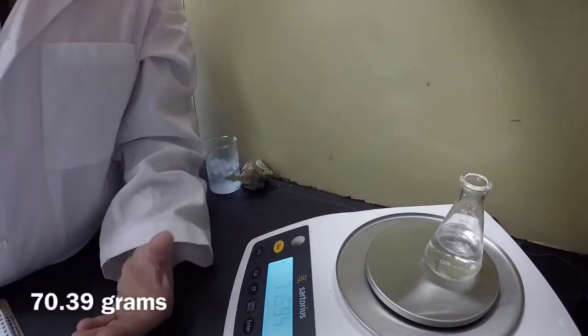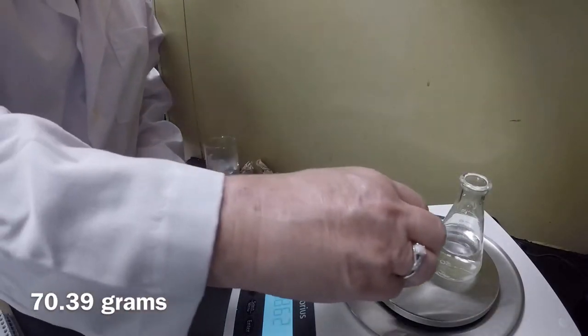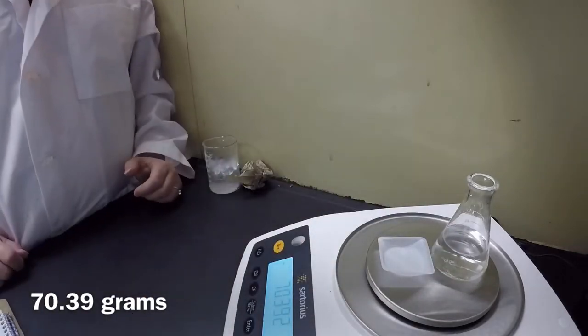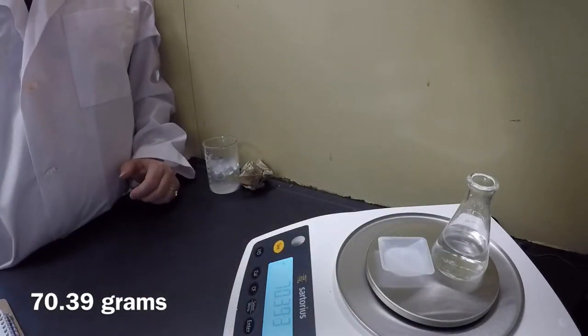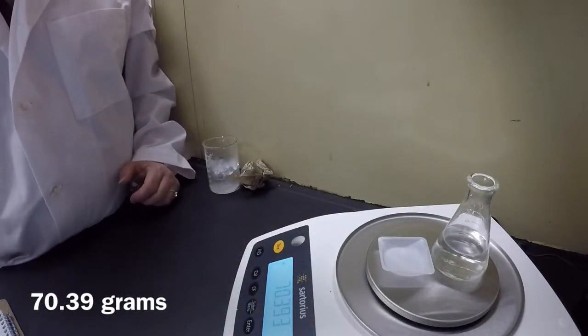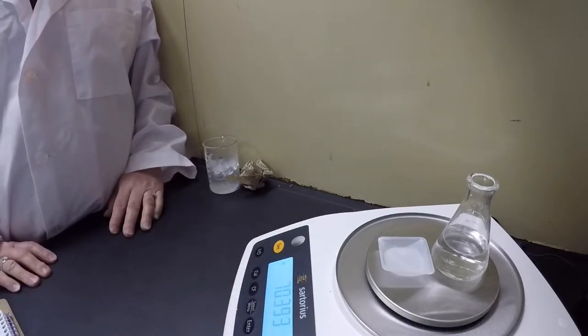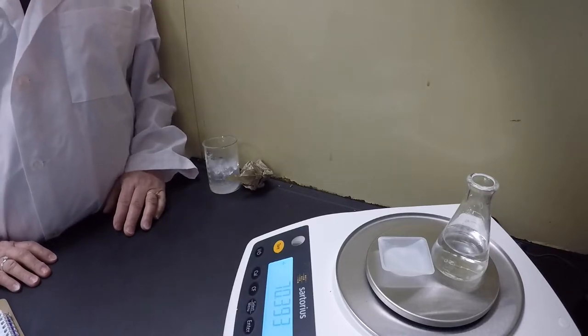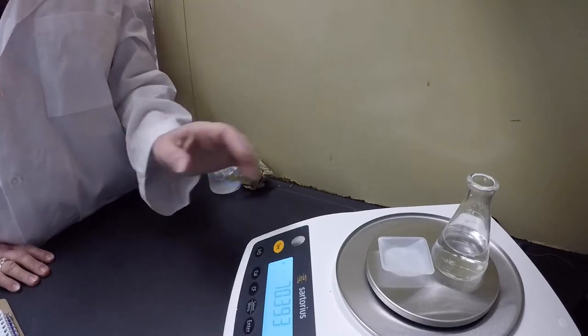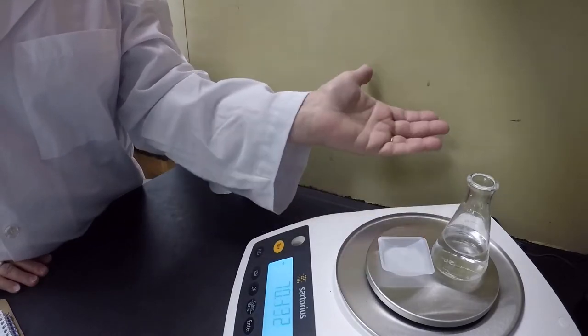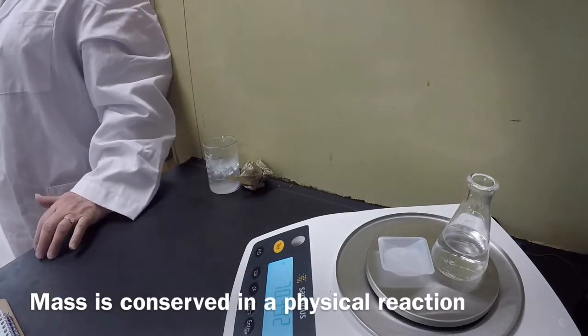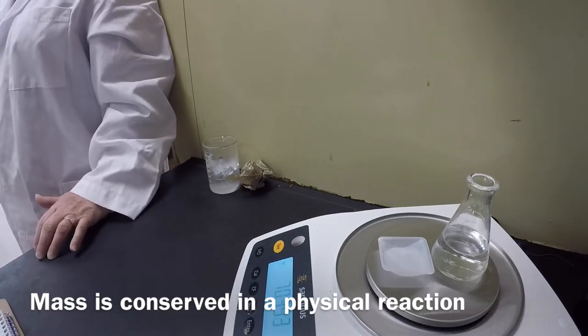So we're going to mass it again. And don't forget your weighing boat, because it did take up mass on our balance. And we have 70.39 grams of water and sugar, our sugar water solution. And we find that the mass has not changed. So even during dissolving matter, the mass does not change.